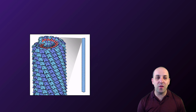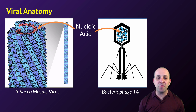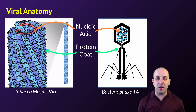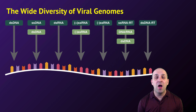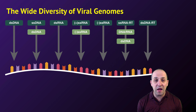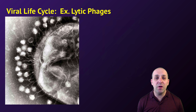Let's take a look at viral anatomy. I've got two very different viruses here: the tobacco mosaic virus and bacteriophage T4. There are two main parts to a virus: some nucleic acid and a protein coat that surrounds it. The nucleic acid doesn't have to be DNA — viruses have a huge diversity of genomes. They can be double-stranded or single-stranded, DNA or RNA, template strand or coding strand. Cellular life has only DNA-based genomes, but viruses show enormous genomic variety.